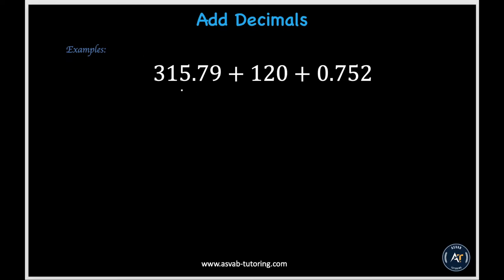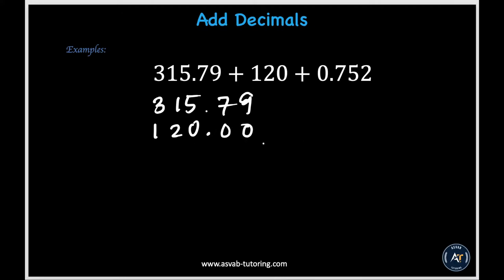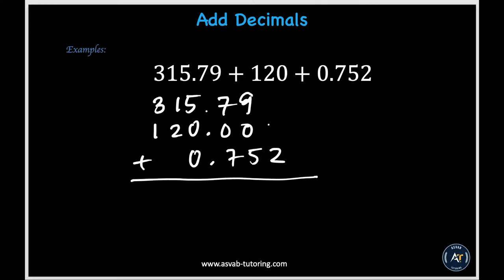In this next example, we are adding 315.79, 120, and 0.752. We'll use column addition again, making sure decimal points are lined up. We have 315.79, then 120 — which has an invisible decimal point at the end, and we can add two zeros to help us. And then 0.752. Notice how all decimal points are lined up in the same place, and so we can start adding.